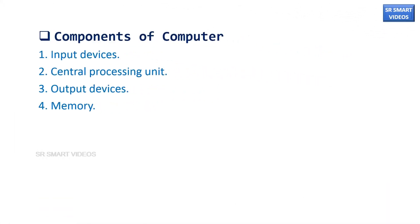A computer system is mainly made up of four components. They are input devices, central processing unit, output devices, and memory. This topic explains the basic components of a computer system in detail.